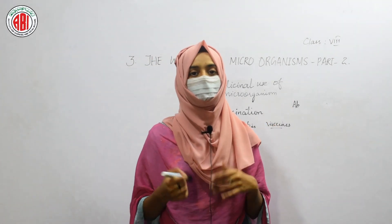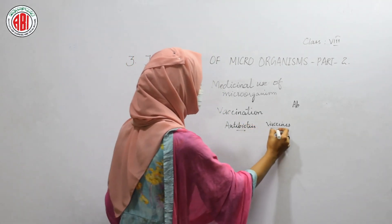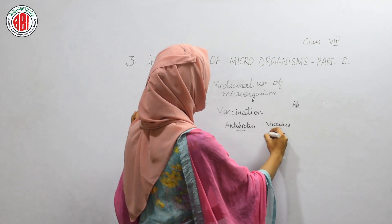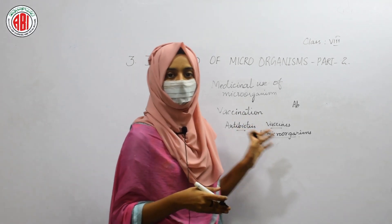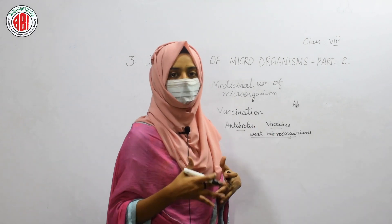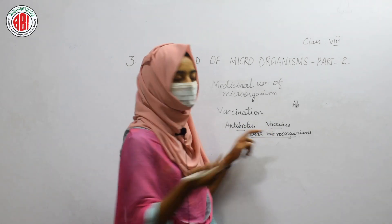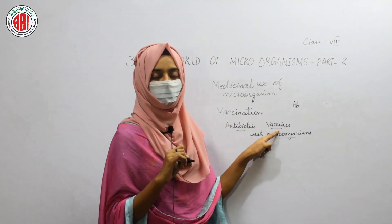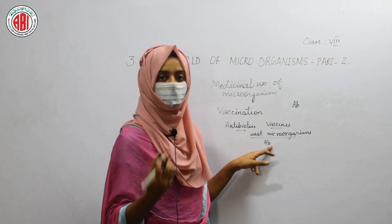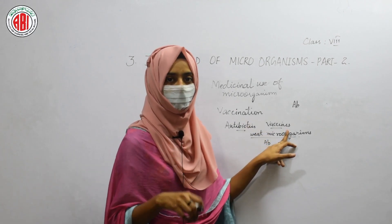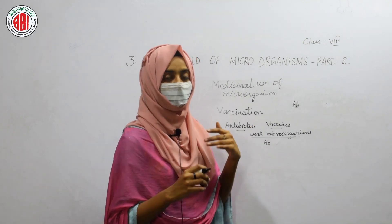Let us see how vaccines help us to increase our immunity. Vaccines are nothing but weak microorganisms. When we inject these weak microorganisms into a person's body, the person's body recognizes that microorganisms have entered and starts producing antibodies. These antibodies fight against and kill these microorganisms. After deactivating them, the antibodies remain in our body for a longer period of time — in some cases, until the death of the person.